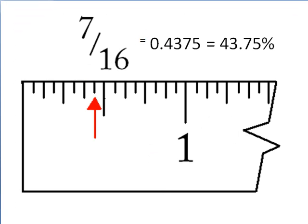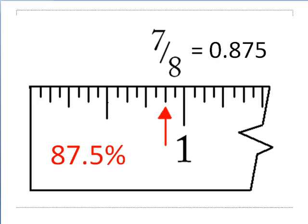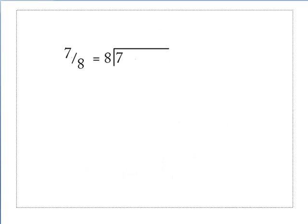So, the answer is 7 sixteenths is equal to 0.4375 or 43.75%. Let's take a look at another example. We have 7 eighths shown here on the ruler, and that's equal to 0.875 or 87.5%.